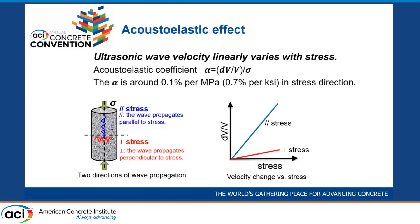The acoustoelastic effect is that the ultrasonic wave velocity linearly increases with compression stress. The acoustoelastic coefficient alpha is defined as the ratio of relative velocity change dv/v over the stress. The acoustoelastic coefficient depends on the wave types and propagation directions. As seen in the figure below, when the wave propagates along the stress direction, alpha is about 0.7% per ksi, and when the propagation is in the unstressed direction, the acoustoelastic coefficient is much smaller.